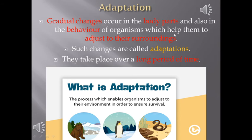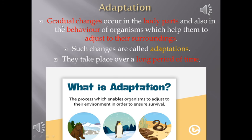Such changes help the organism adjust to its surroundings. If the organism does not adjust to the surroundings, it will die. It is important for the organism's survival to change according to the surroundings. If it does not adjust, it is going to affect its survival. So, in search of food, shelter, and habitat, organisms adjust to their surroundings. These adjustments happen over a long period of time, and such adjustments are called adaptations.